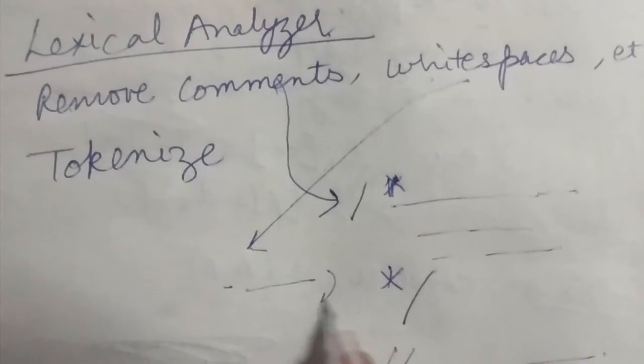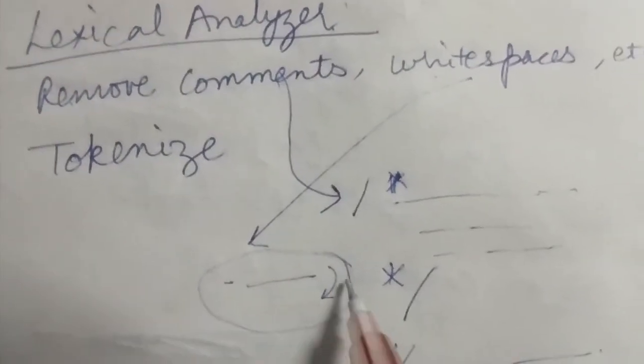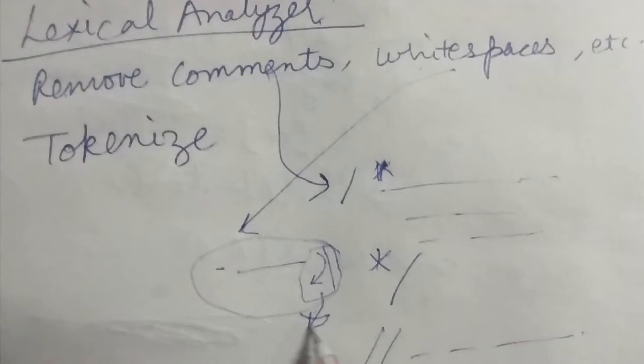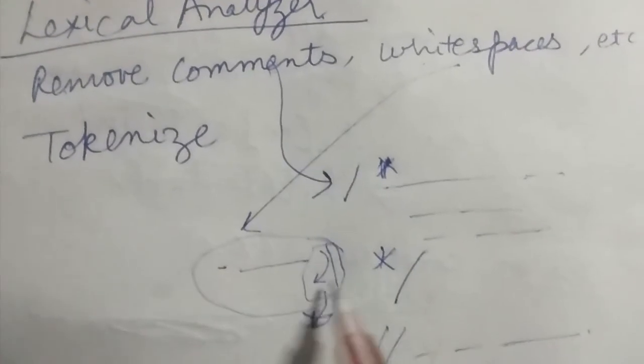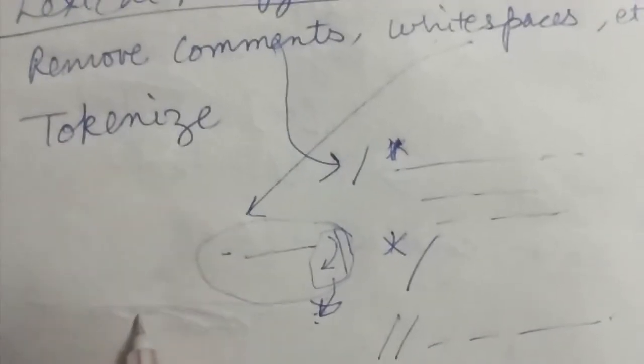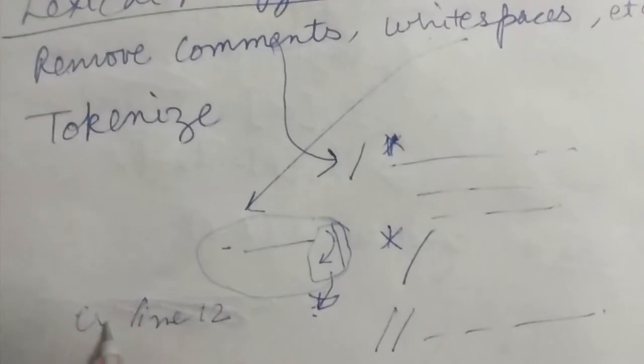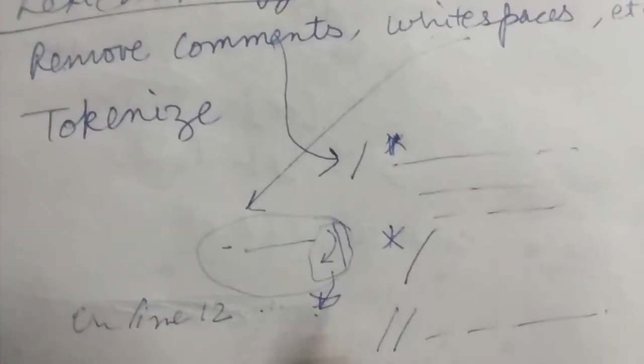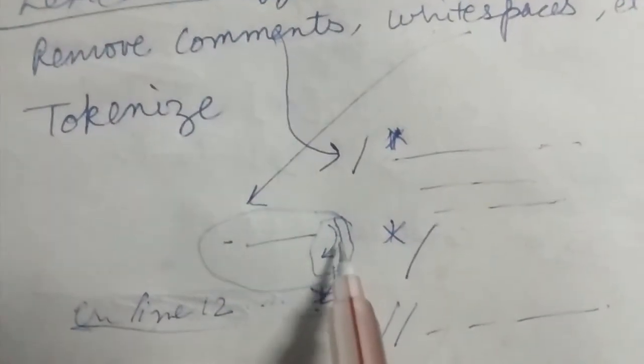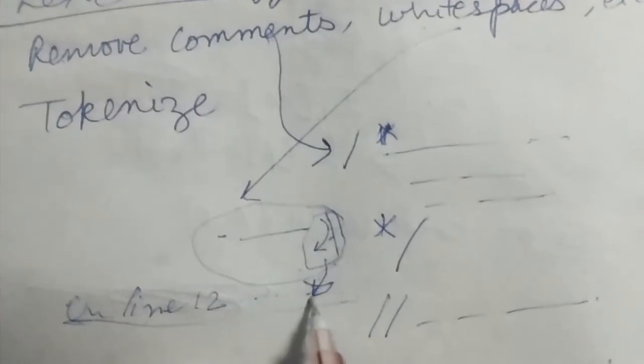Newlines are also removed, but the lexical analyzer keeps track of how many newlines have been passed so that it can later report which line has an error. Your compiler shows errors like 'error in line 12: x not defined'. These line numbers are identified by counting how many backslash-n's we have passed.